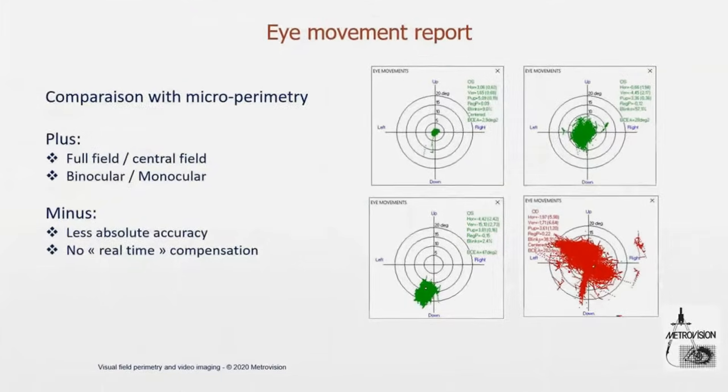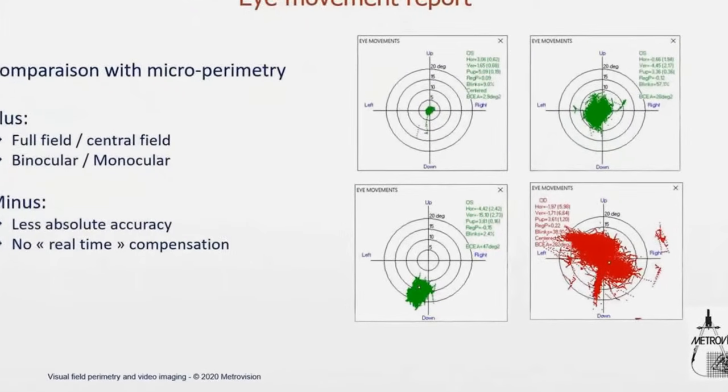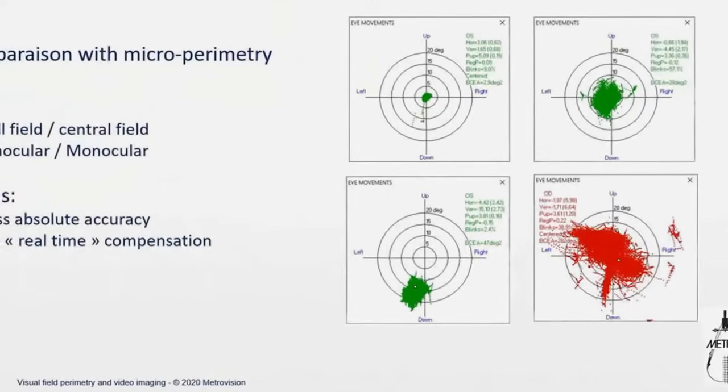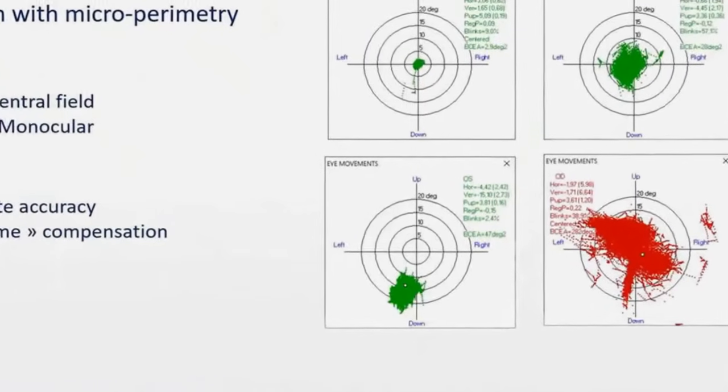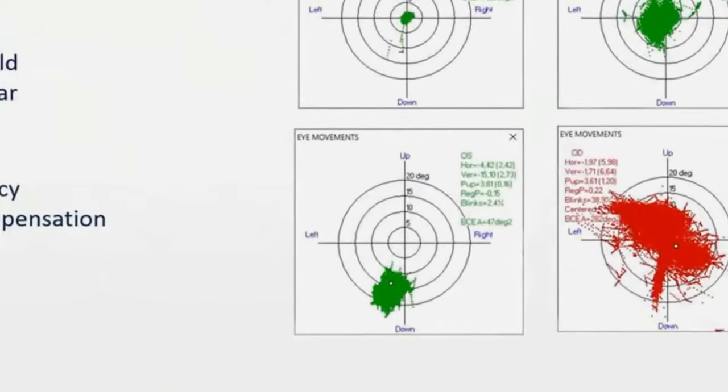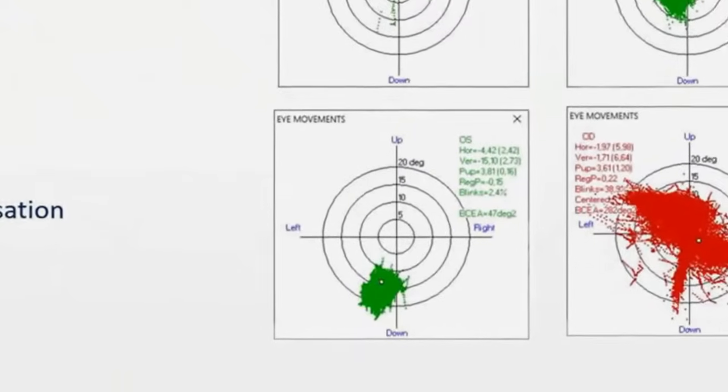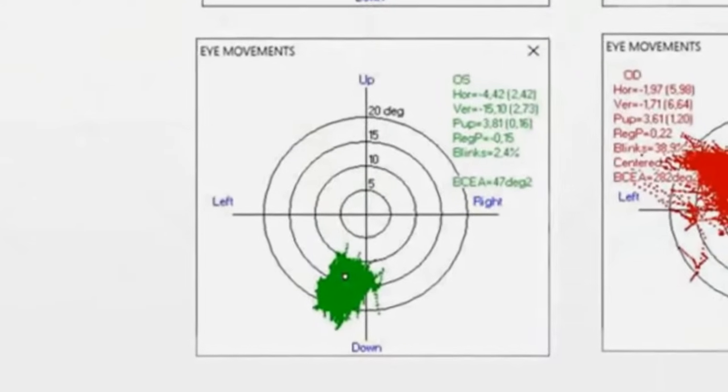Now this is showing a significant eccentric fixation because it's something like 15 degrees. So we can differentiate 15 degrees of eccentric fixation. We cannot differentiate less than 5 degrees, but 15 degrees for sure we can. And so this is probably because the patient has a central scotoma and is fixating on the side of the scotoma.